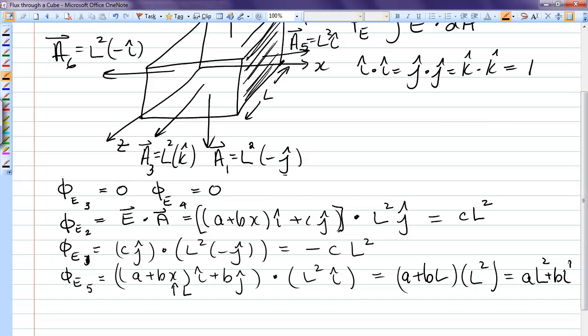Now we do the left-hand face. That's phi e6. And on this face, once again, x is constant, but x is zero. So x equals zero here, which means the electric field is just a i hat plus c j hat. And we're dotting that with a6, which is L squared negative i hat. So now we're going to just pick up negative a L squared.